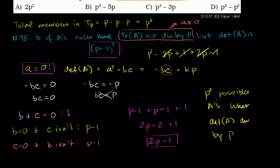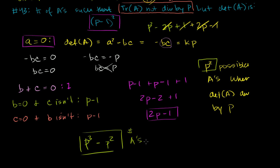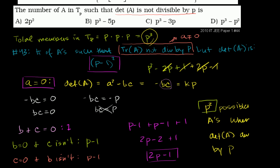We're very close, but this isn't what they're asking. They want the total members where the determinant of A is not divisible by p. So we take our total membership, p cubed, and subtract the members whose determinants are divisible by p, which is p squared. That gives us p cubed minus p squared — the number of A's where the determinant of A is not divisible by p. And that is answer choice D: p cubed minus p squared.